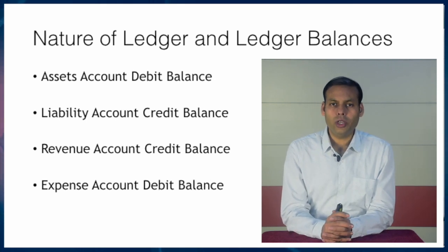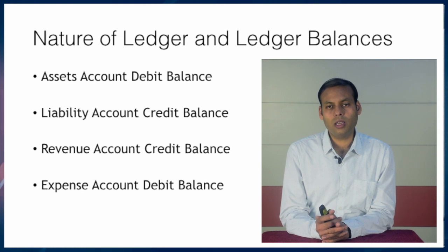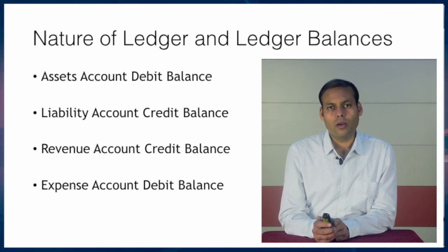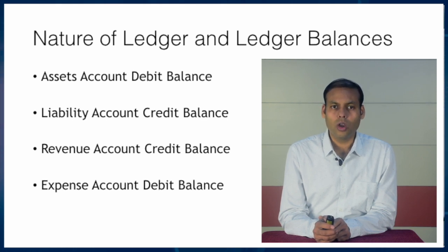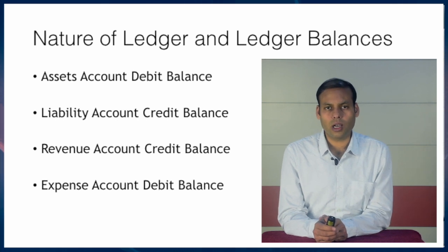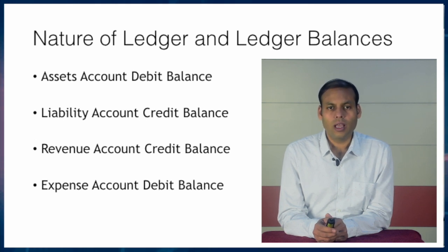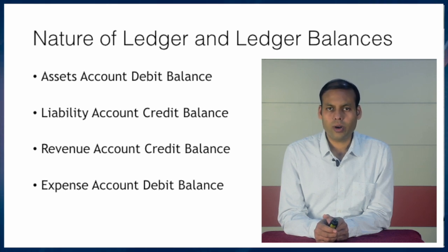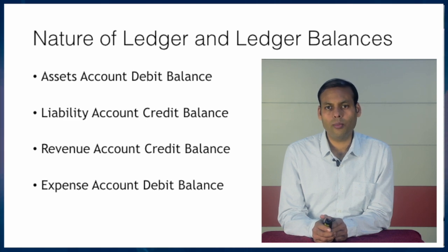According to the nature of accounts, there are certain ledger balances we can easily detect. Asset accounts will always have a debit balance — for example, if we purchase machinery for our business, the machinery ledger will always show a debit balance because it is an asset. In the case of a liability account it will show a credit balance — for example, a bank loan. For revenue accounts it generally shows a credit balance — for example, a sales account. Expense accounts will always show a debit balance — for example, a purchase account.